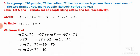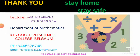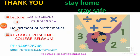I hope you have understood the practical problems on union and intersection. These are the questions expected in the examination for 2 to 3 marks. The remaining problems we will do in the next class. If you have any queries please contact the number given below. Thank you, stay home stay safe.